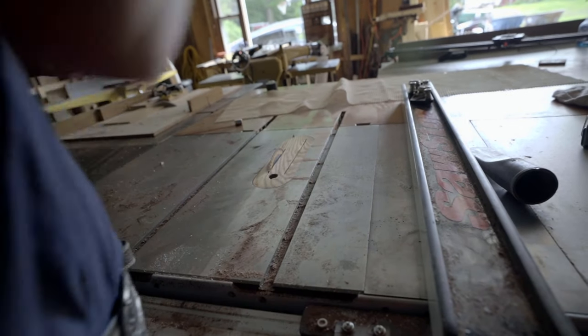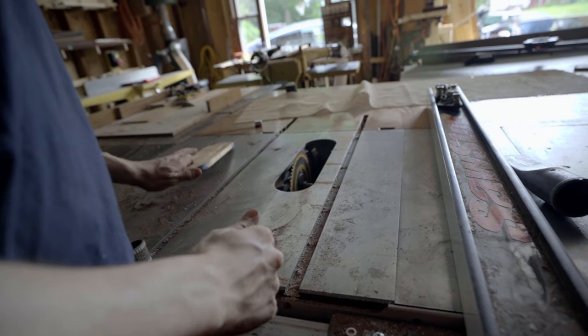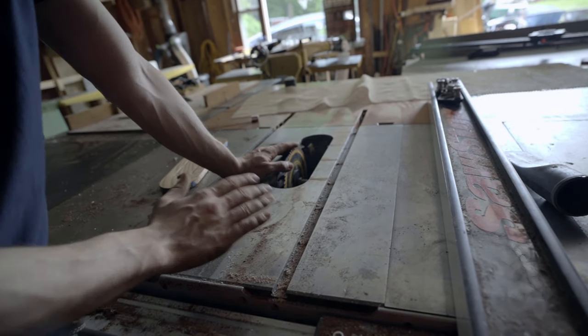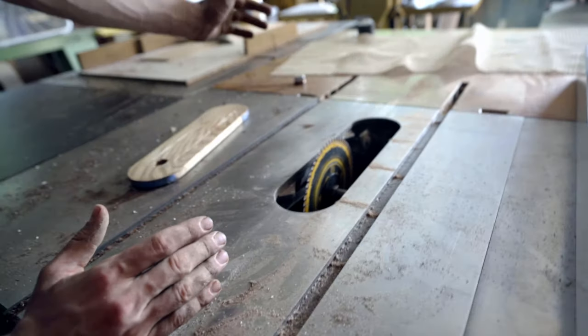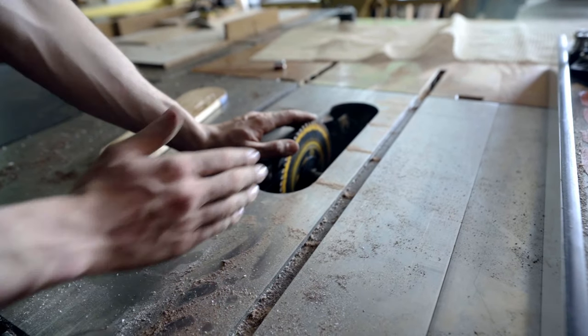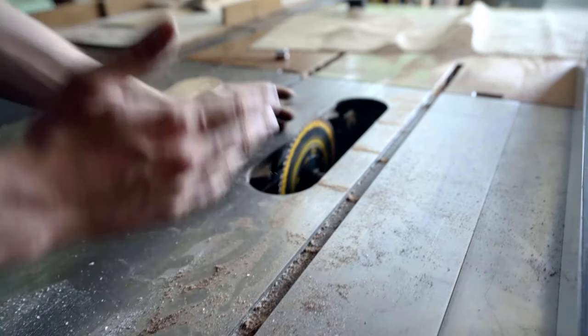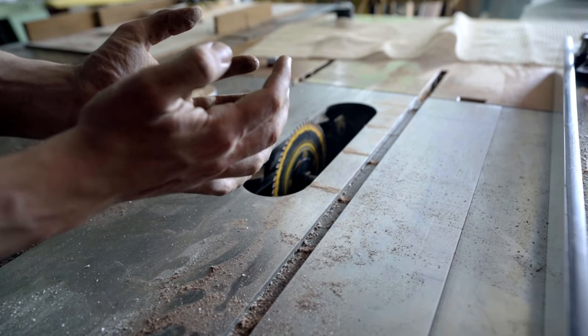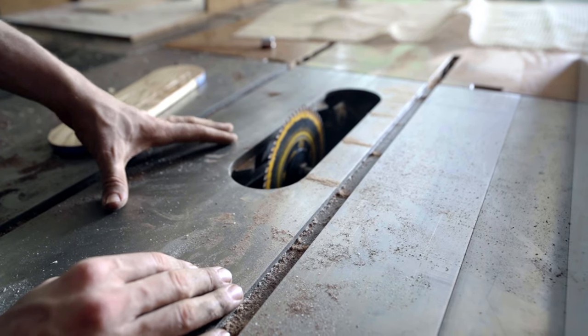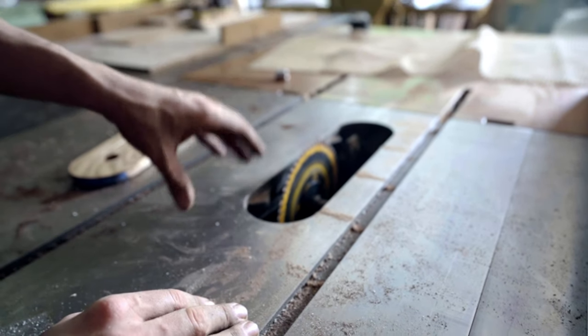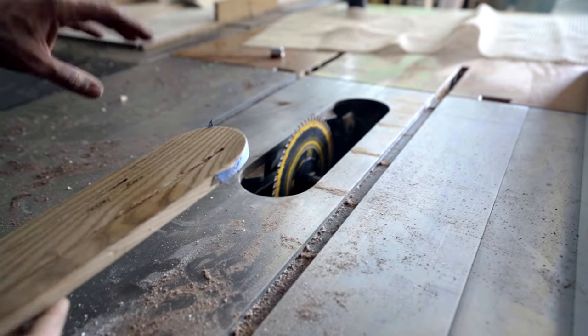That's the reason I use those. This saw, the Unisaw, doesn't do as good a job at collecting the dust as the Saw Stop just because of the way they made the housing. Inside the Saw Stop there's a little cone around the blade so it collects a lot more of the dust. But again the Saw Stop is a lot newer than my Unisaw, so for that reason I like the Saw Stop a little more.